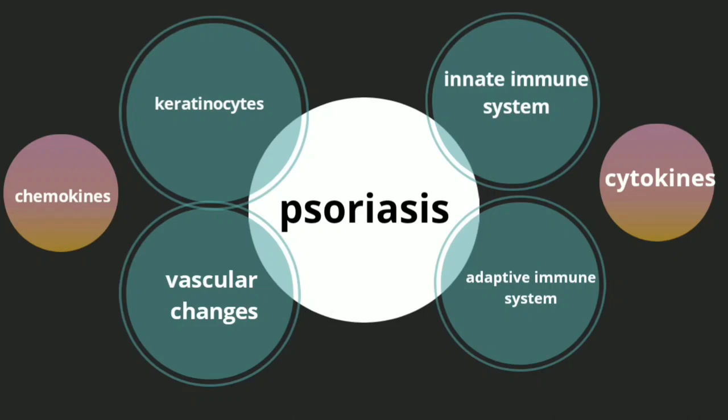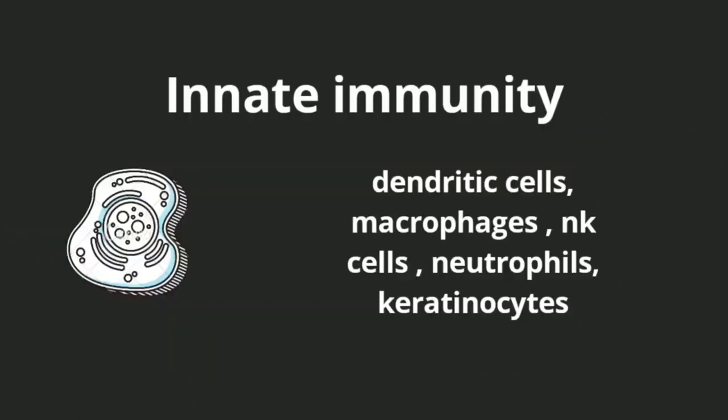In addition to these four components, chemokines and cytokines also play an important role in the pathogenesis of psoriasis, and I will keep notifying you throughout the presentation. First of all, it's important to know which cells are present in the innate immunity and which cells are present in the adaptive immunity. It's a very basic concept and most of you already know this, but I would like to emphasize it for a clear understanding of the pathogenesis.